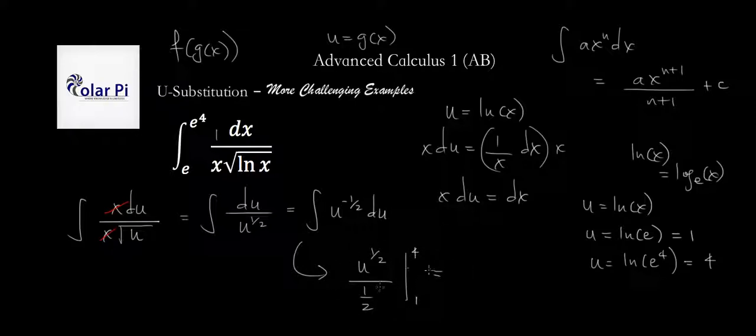So, our limits of integration are going to be 1 and 4 instead of e and e to the 4th. But then we could also take care of dividing by 1 half. It's the same as multiplying by 2. So, we write 2 root u evaluated at 1 and 4.